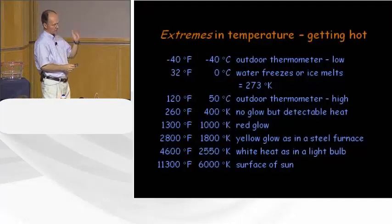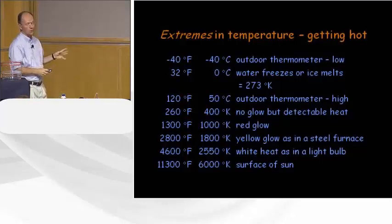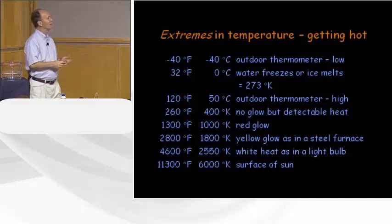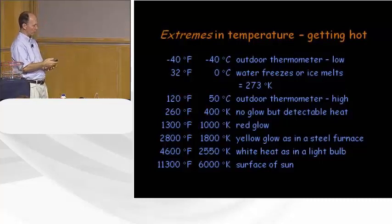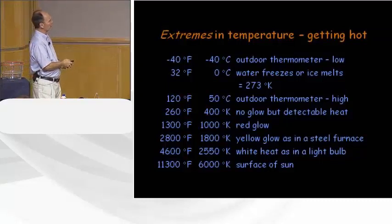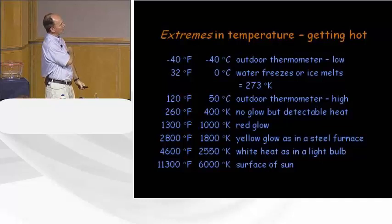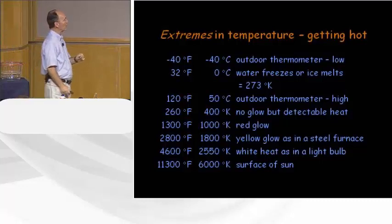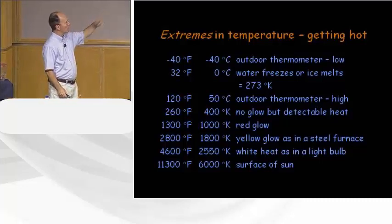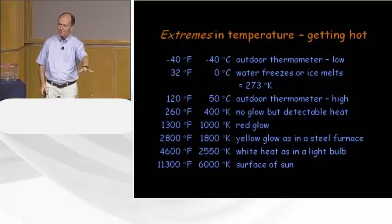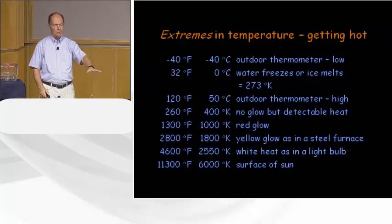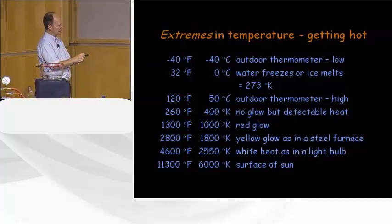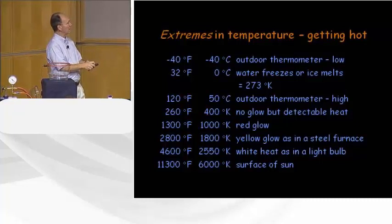We're going to talk about extremes in temperature going toward the hot end of the spectrum. At 32°F or 0°C, that's the melting point of water. At 120°F or 50°C, that's about the limit on my home thermometer, thankfully higher than I've seen. An electric stove top on low can reach 200–260°F — you can feel heat but don't see any light. It takes something like 1,000–1,300°F or 1,000 Kelvin to see a red glow; you have to get much hotter for yellow glow as in a steel furnace. Inside a light bulb, it's about 4,600°F or 2,500 Kelvin.